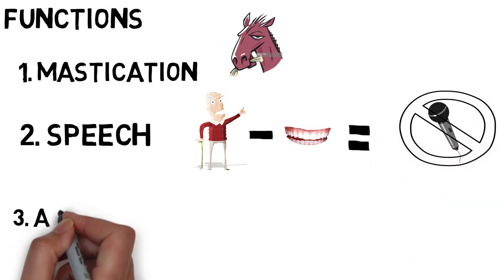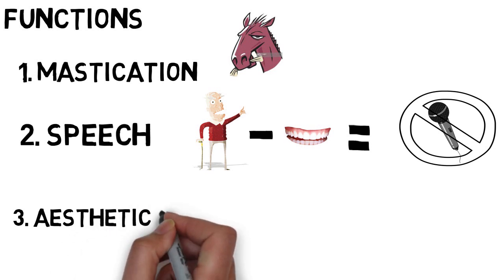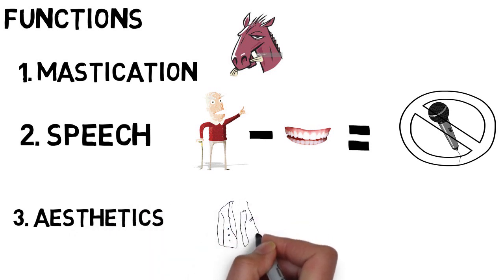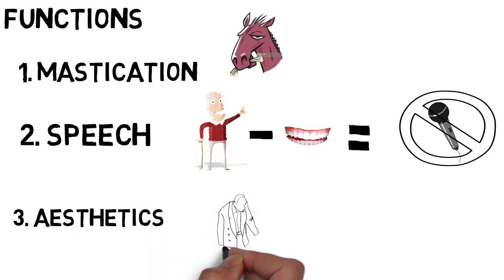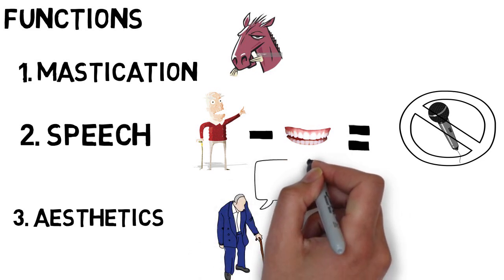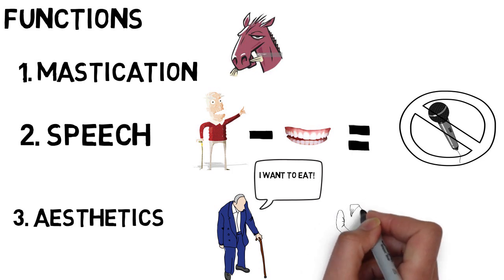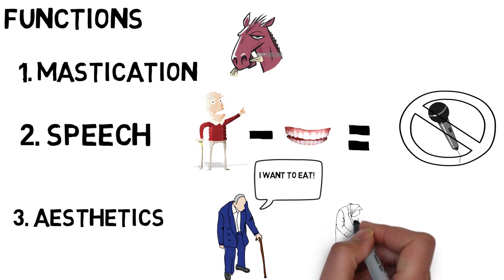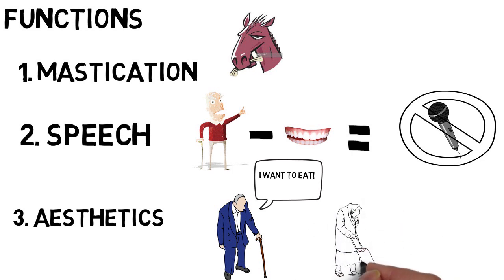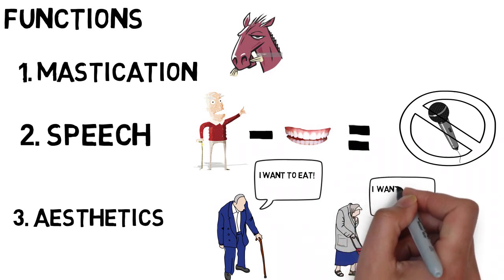The third function that our teeth perform is aesthetics. The reason I placed it third is because the first two functions are really important, and the third is only a priority for younger people. If you ask an older person whether he wants his teeth for aesthetics, he will clearly say no — he wants them for mastication and speech. So aesthetics is important for younger and middle-aged people, but not so much for older people.